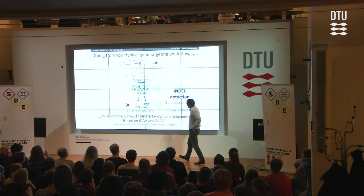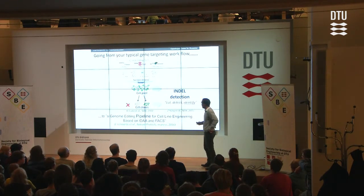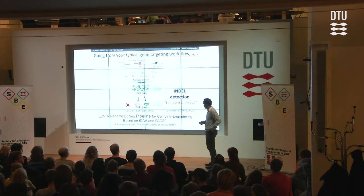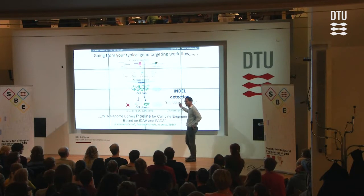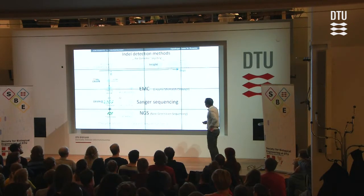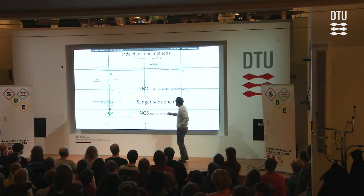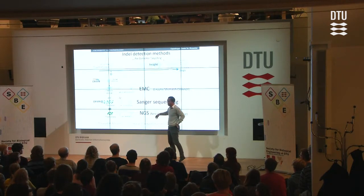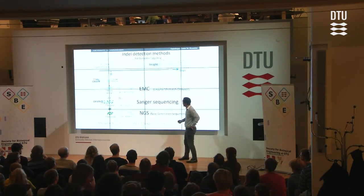We've combined this into a pipeline where we can in a high-throughput manner engineer cells. This is detailed in our published protocols. There are obviously detection methods available. The most commonly used is one called the enzyme mismatch cleavage assay. And then there are sequencing-based methods: Sanger sequencing and next-generation sequencing. These are really powerful, but there are some problems with these assays.